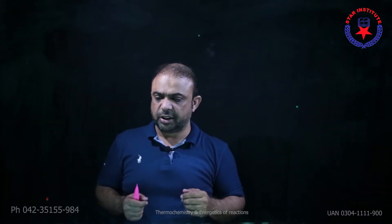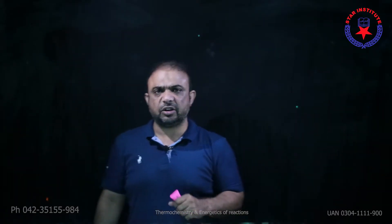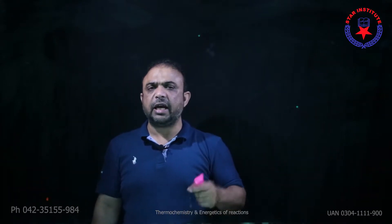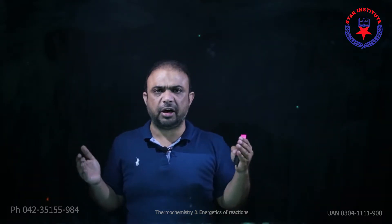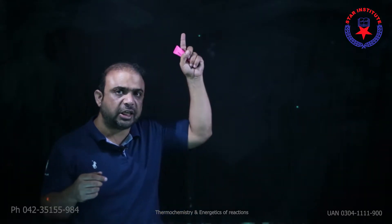Question number two: 'The net change in a chemical reaction is the same whether it is brought about in two or more different ways, in one or several steps' — this is the definition of Hess's Law. Hess's Law states that energetically, a chemical reaction is independent of its path. The total energy change depends only upon the initial and final states of the system.